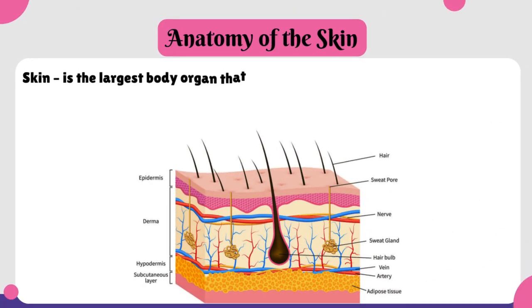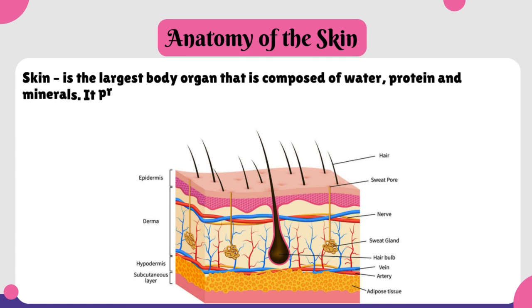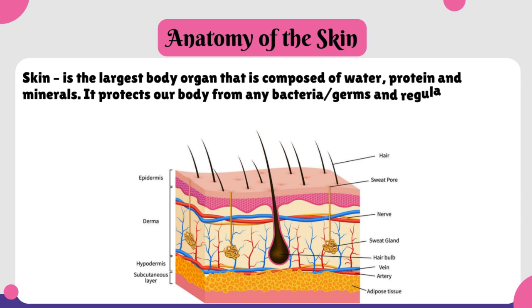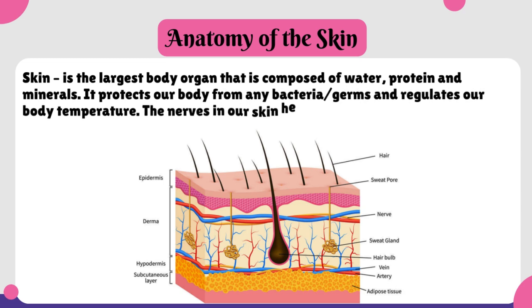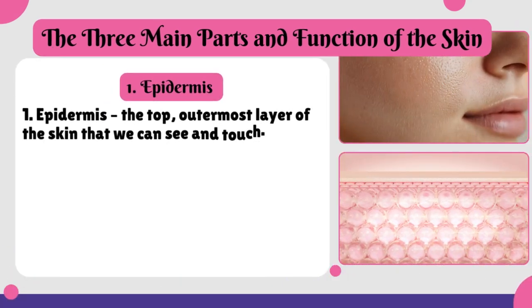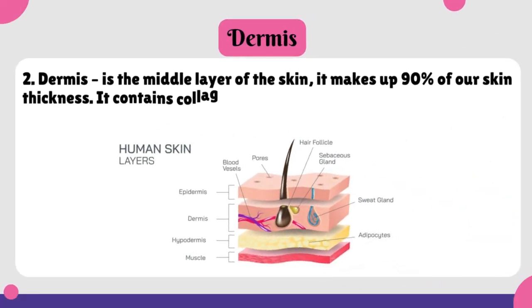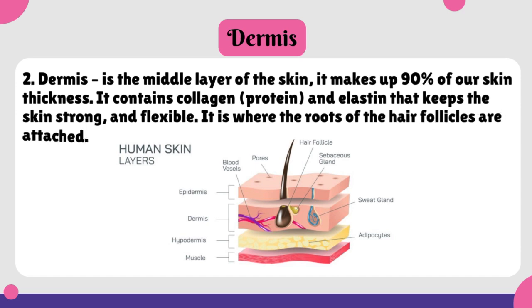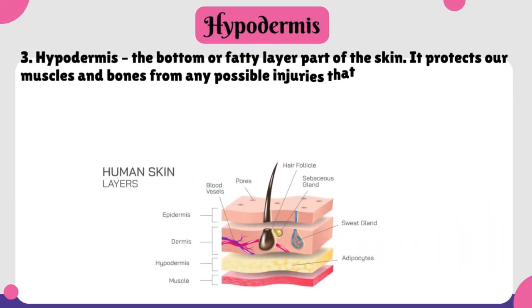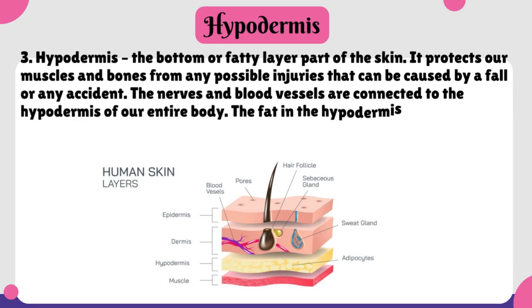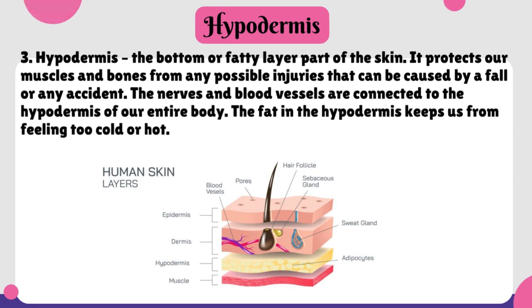B. Anatomy of the Skin. Skin is the largest body organ composed of water, protein, and minerals. It protects the body from bacteria and regulates temperature. The nerves in our skin help us feel cold and hot sensations. Three main parts and functions of the skin: Epidermis — the outermost layer that protects us from bacteria and infection. Dermis — the middle layer, making up 90% of thickness, that contains collagen and elastin for strength and flexibility. Hypodermis — the fatty layer that protects muscles and bones from injury, connects nerves and blood vessels, and regulates body temperature.